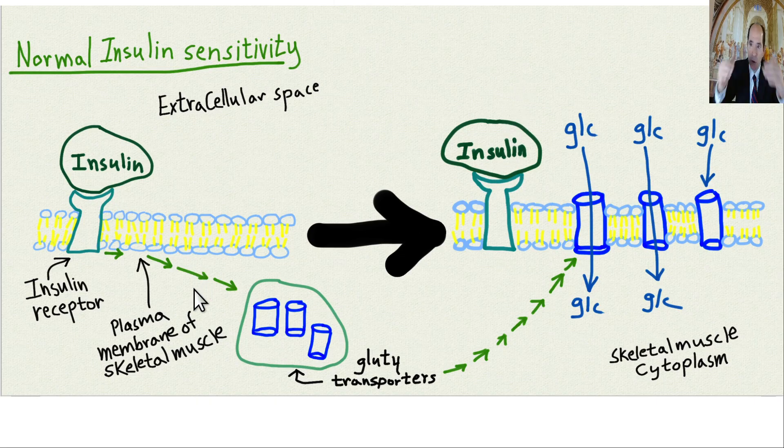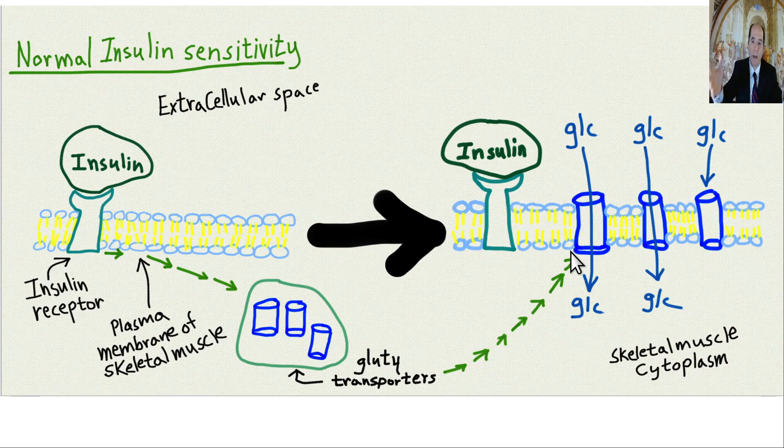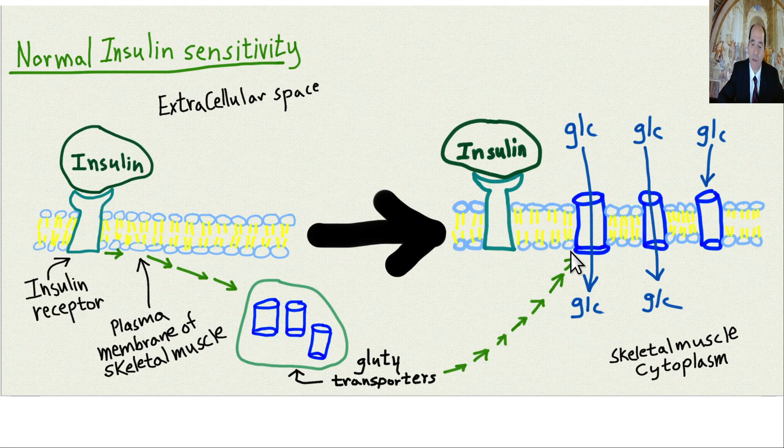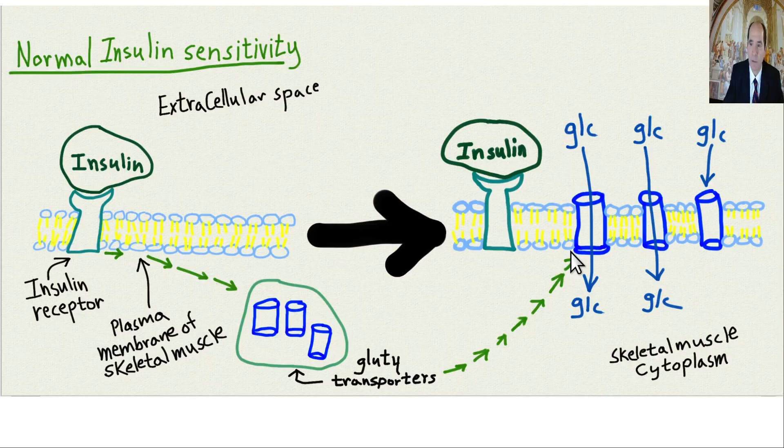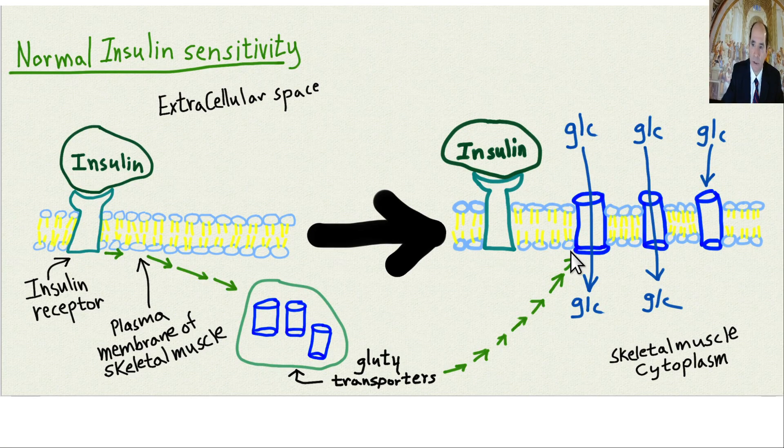When this works well, that's called good insulin sensitivity. When the insulin's not working well, it's not able to get these glucose transporters up to the plasma membrane, that is called insulin resistance. Normally, a very large amount of postprandial, postprandial means after eating, blood glucose goes into the skeletal muscle. It's a good spot for it because it can be stored as glycogen. Skeletal muscle is your biggest organ system in your body, and it can store a lot of glycogen. Up to 70% of your postprandial glucose can go into your skeletal muscle.